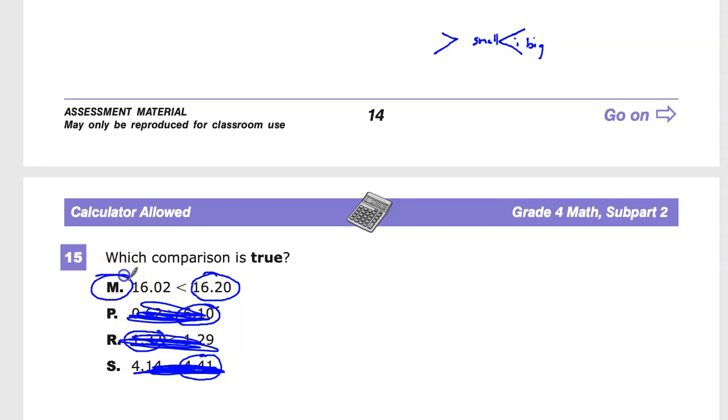So our last answer, or our first answer choice really, is this one. It tells the correct story. 16.2 is next to the bigger end, so it's telling us 16.2 is greater than 16.02, which is true. So 16 and 2 tenths is greater than 16 and 2 hundredths. It also tells us that 16 and 2 hundredths is less than, because it's next to the small end, 16.2, which is true.